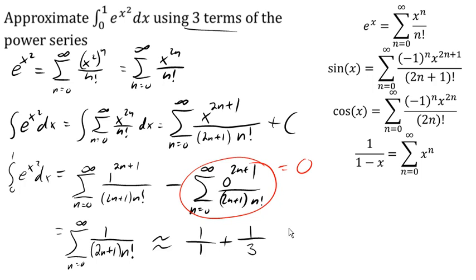And when n equals 2, we're going to get 1 over 2 times 2 is 4 plus 1 is 5. So 1 over 5 times 2 factorial, and 2 factorial is 2, so 1 over 10.